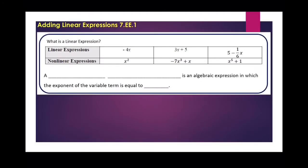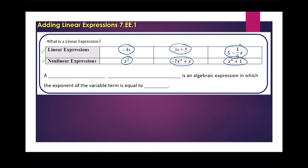Now the first thing that you might want to do is understand what makes a linear expression. So if we look at this table right here, we've got one row that represents linear expressions, and we have another row that represents non-linear expressions. What do you notice about these values that might distinguish them from these other terms? Do you notice anything about those that makes them different?